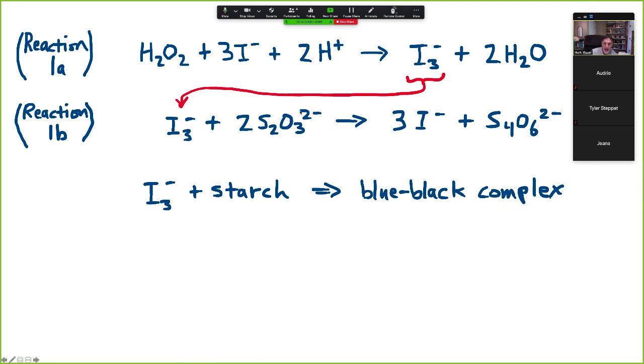We're going to call this reaction 1B where the I3 minus that's produced in reaction 1 very quickly reacts with S2O3 2 minus, the thiosulfate ion, to regenerate I minus. So it uses up the I3 minus that was produced in the first reaction and regenerates I minus. And what that means is you don't get the I3 minus and therefore it can't react with starch because it's used up right away before it can react with starch. And we add only a small amount of the S2O3 2 minus so that as soon as that's used up, then I3 minus has nothing else to react with other than starch and it turns blue black.